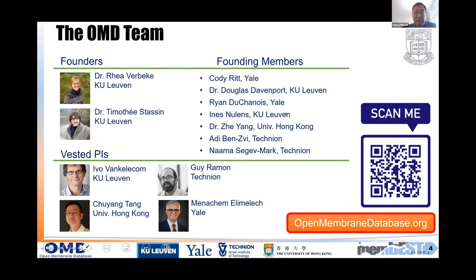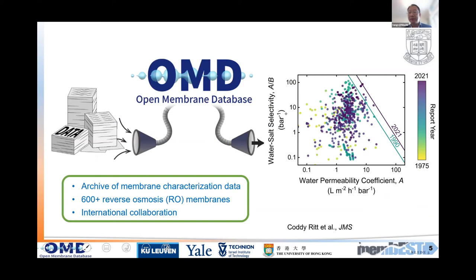Together with collaborators from KU Leuven, Yale, and Technion, we have been developing an Open Membrane Database — a common public platform where researchers can upload their membrane performance data. This database enables meta-analysis; for example, sorting data by year to observe how the upper bound has been shifting upwards over the last 30 years.